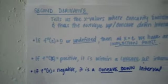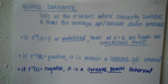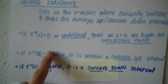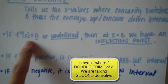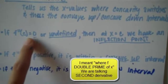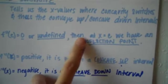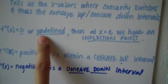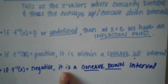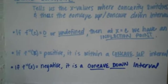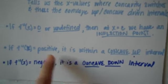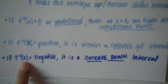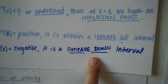The next thing we're going to look at is the second derivative. The second derivative has everything to do with concavity. It tells us the point of inflection — that's where f double prime of x equals zero or undefined. If the second derivative is positive, it's concave up. If f double prime of x is negative, that means it's concave down.